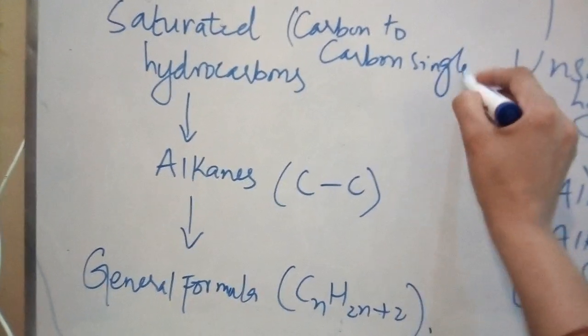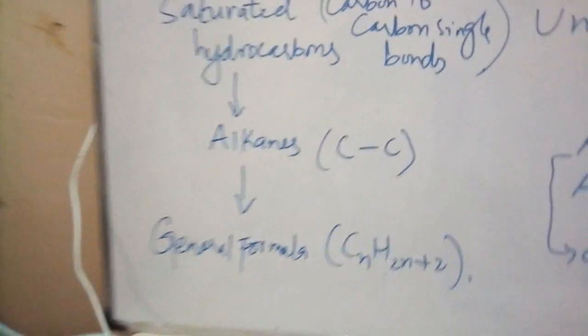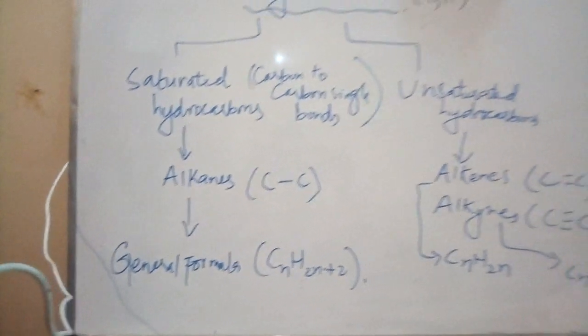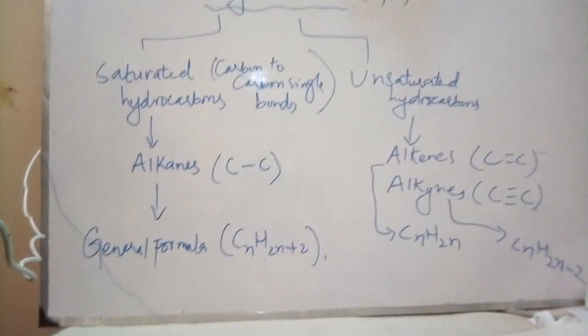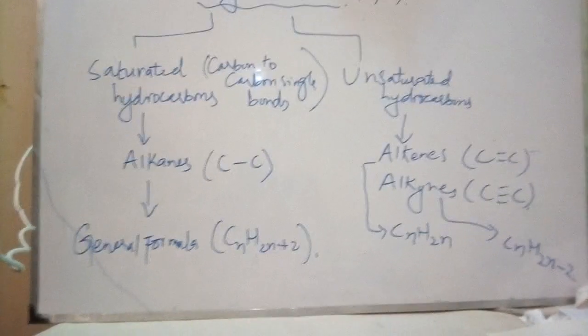Single bonds are present in them, and an example of saturated hydrocarbons are alkanes. Their general formula is CnH2n+2.